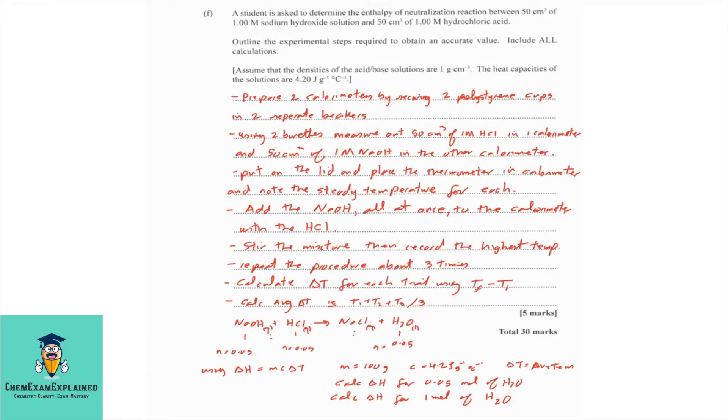Let's look at the answer. First, you must prepare two calorimeters by securing two polystyrene cups in two separate beakers. You are going to use two burets and measure out 50 cm3 of 1 molar HCl in one of the calorimeter and 50 cm3 of 1 molar sodium hydroxide in the other calorimeter. You are then going to put on the lid and place the thermometer in the calorimeter and note the steady temperature for each. Add the sodium hydroxide all at once to the calorimeter with the HCl. Stir the mixture, then record the highest temperature. Repeat the procedure about three times for accuracy.